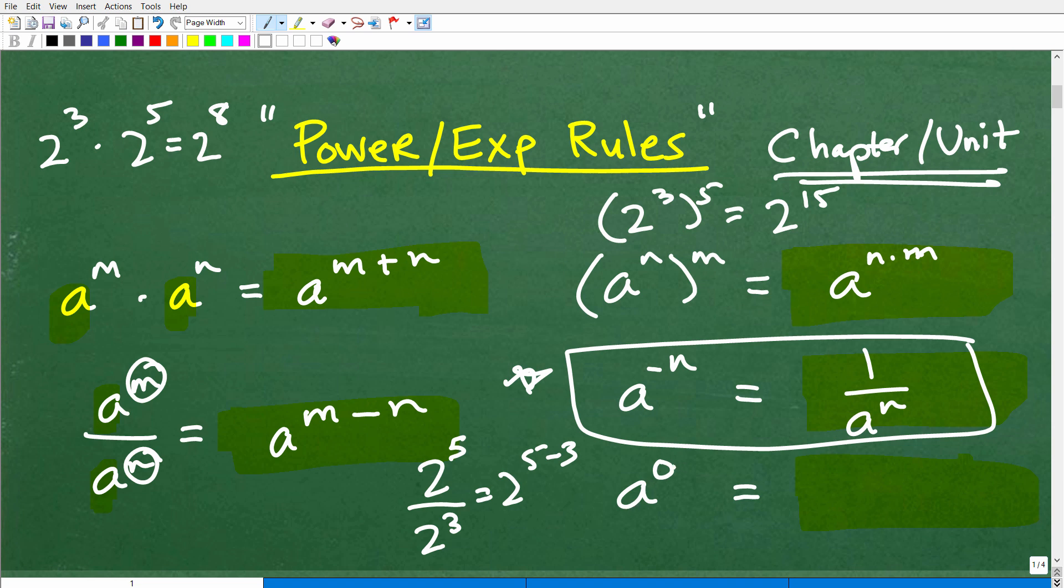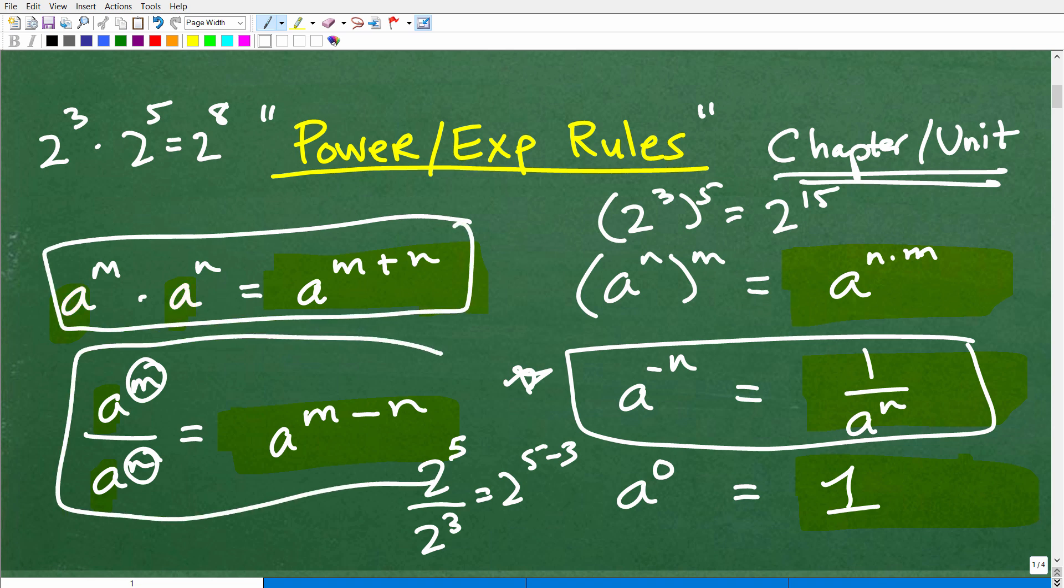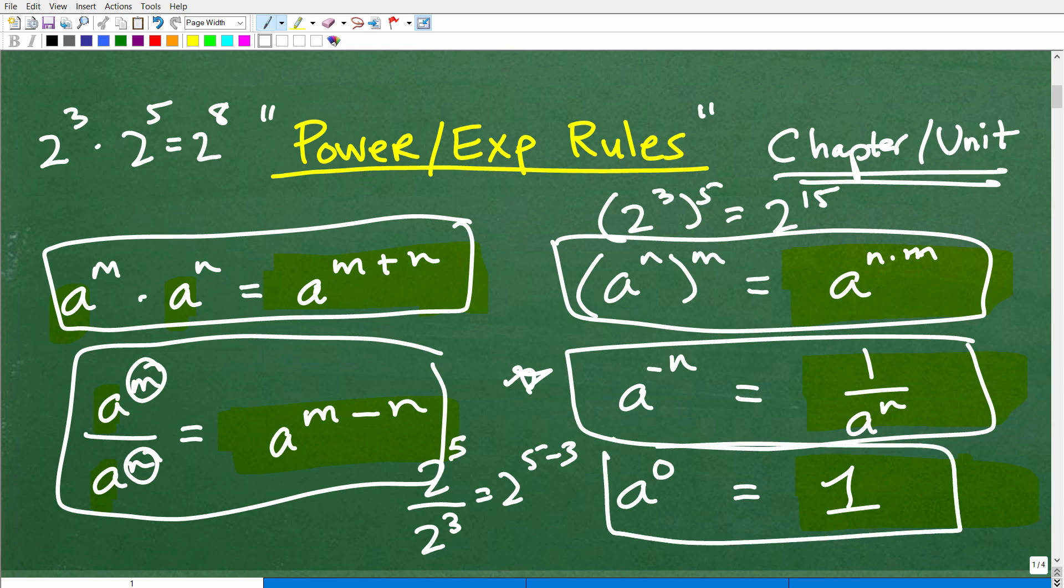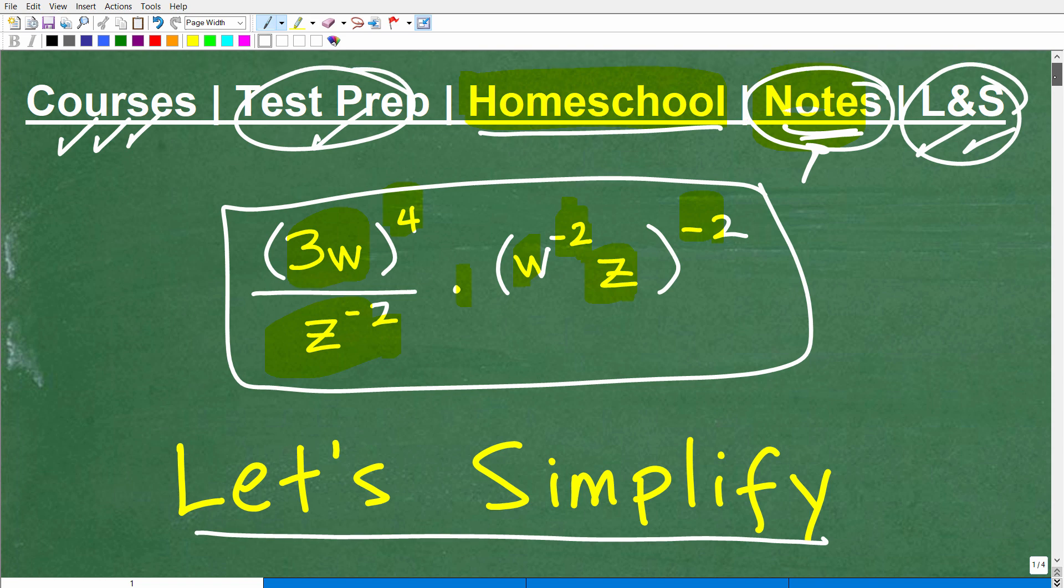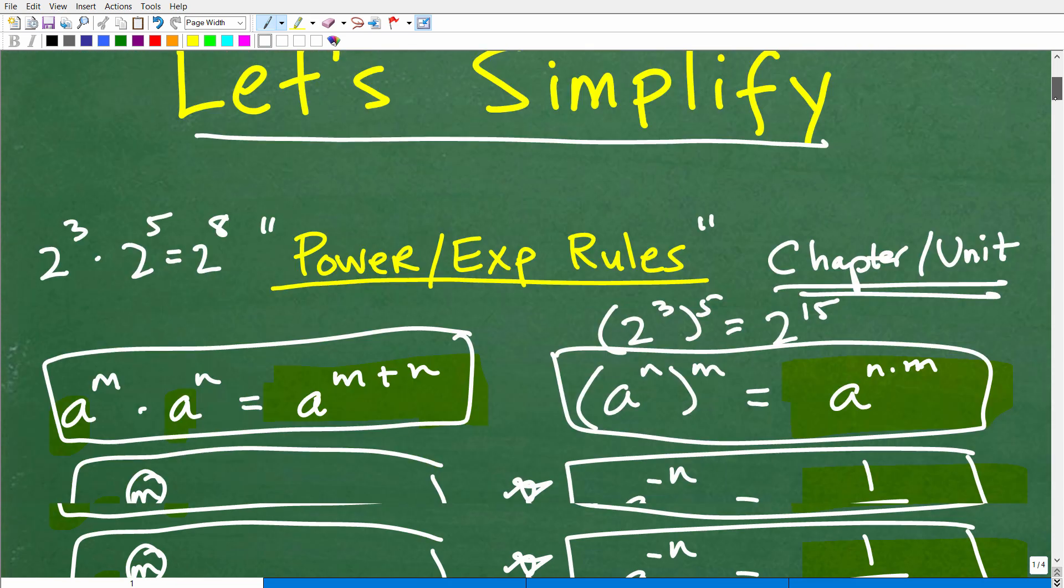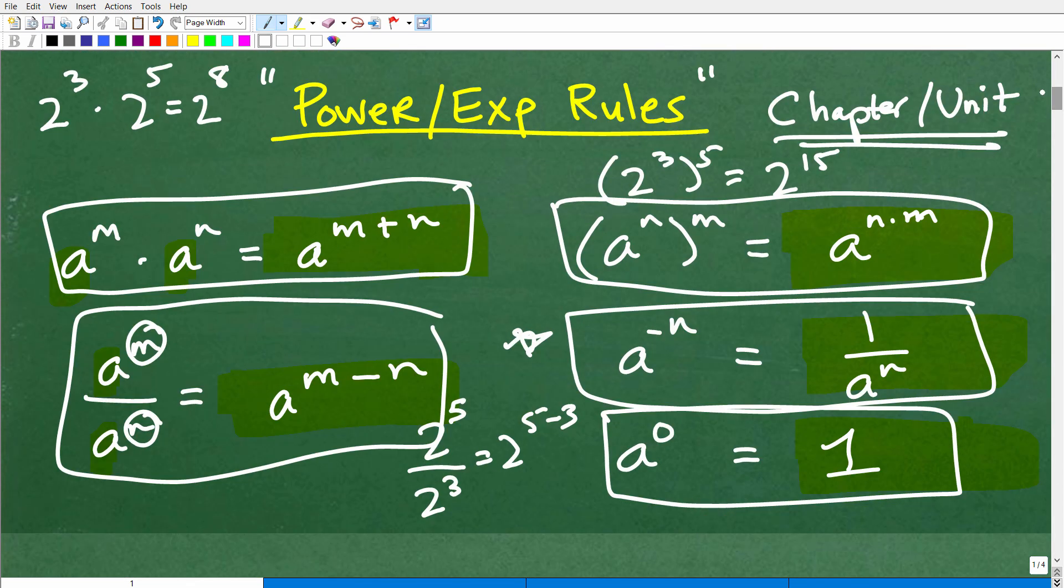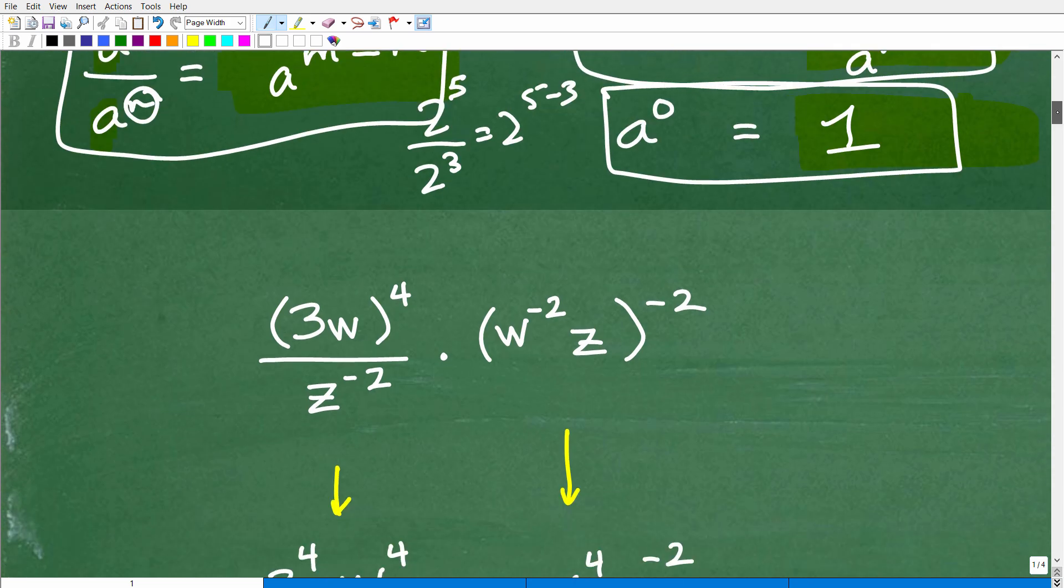And here's our last rule. a to the 0 power. Anything to the 0 power is equal to what? Hopefully, you answered 1. Anything to the 0 power is 1. Okay, so these are the rules that you need to use to answer these questions, these type of power and exponent questions. Things like this, again, huge part of algebra. You absolutely need to understand these rules in order to pass algebra.